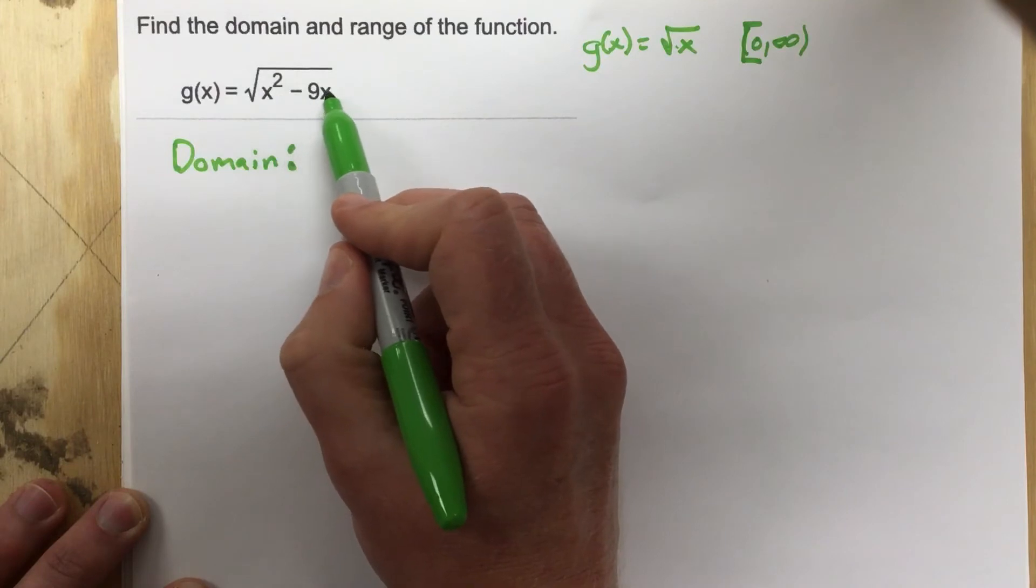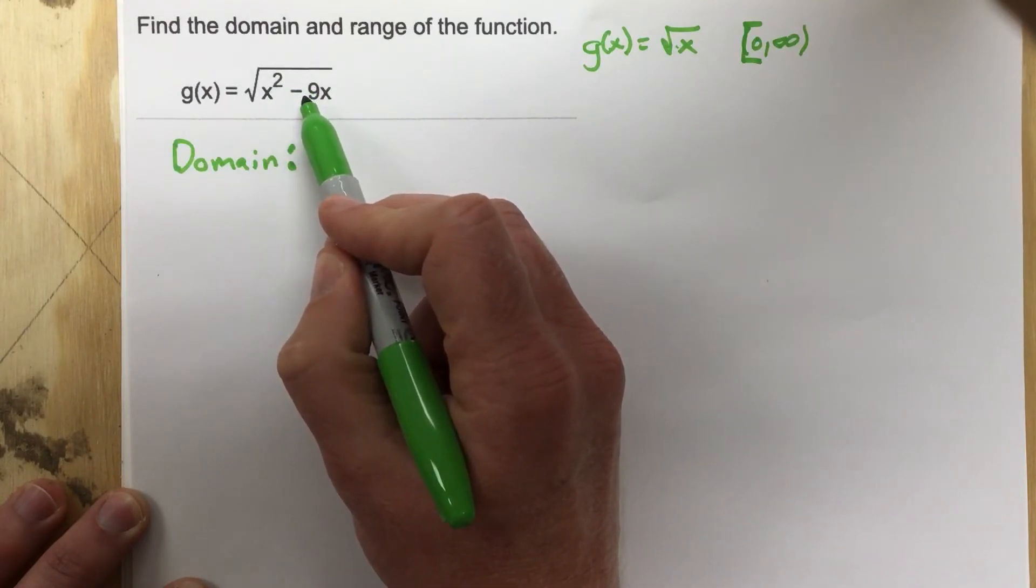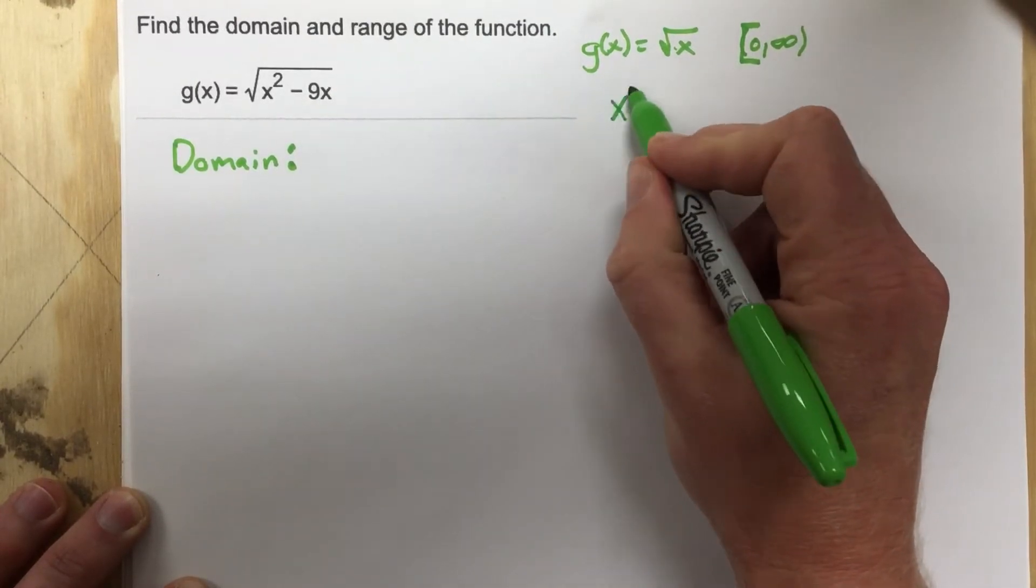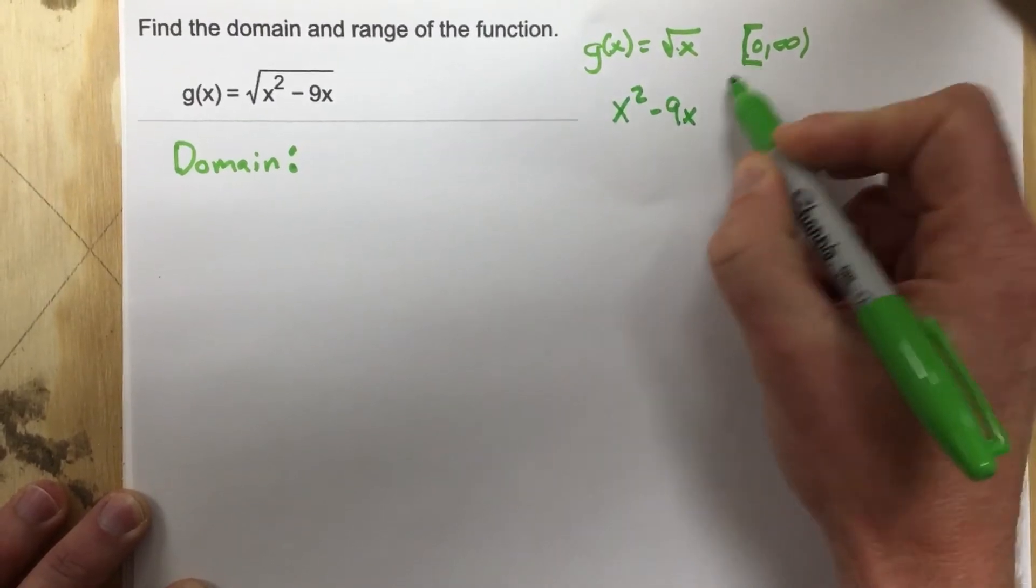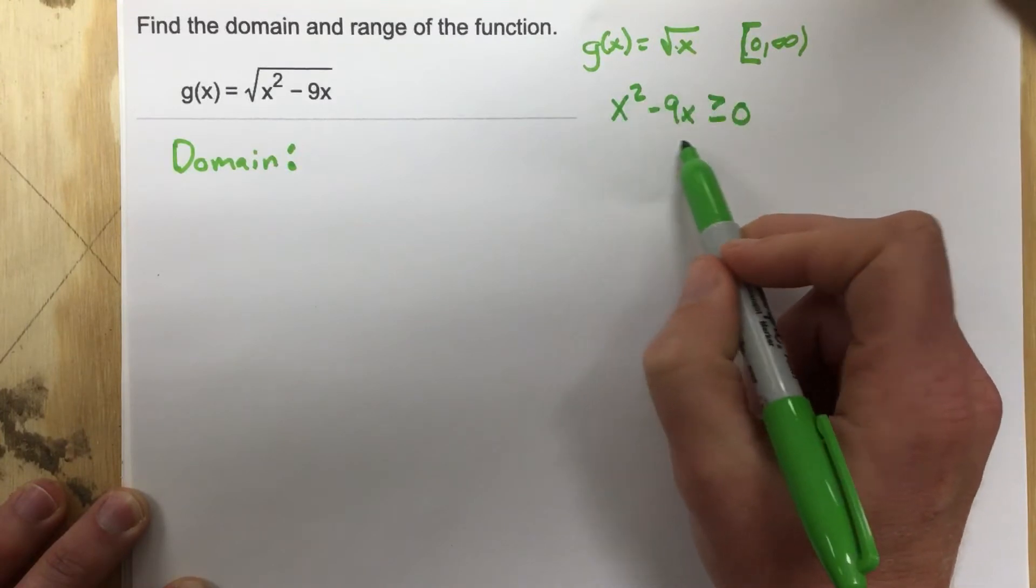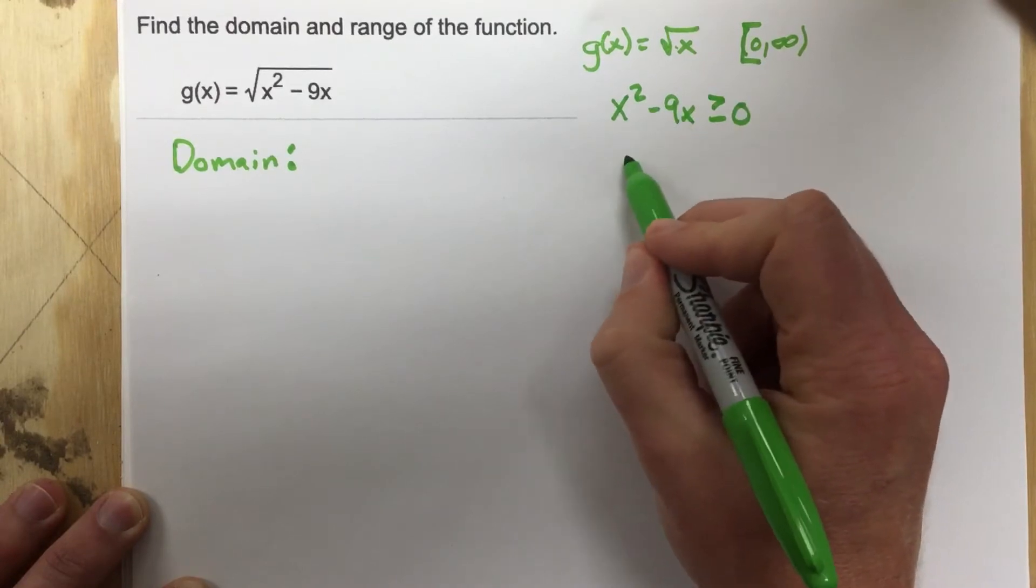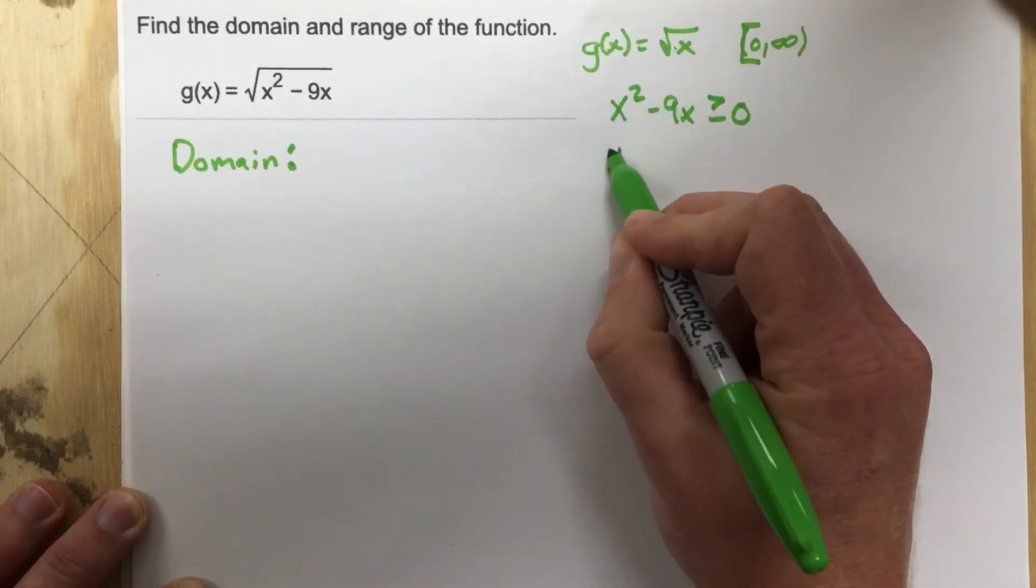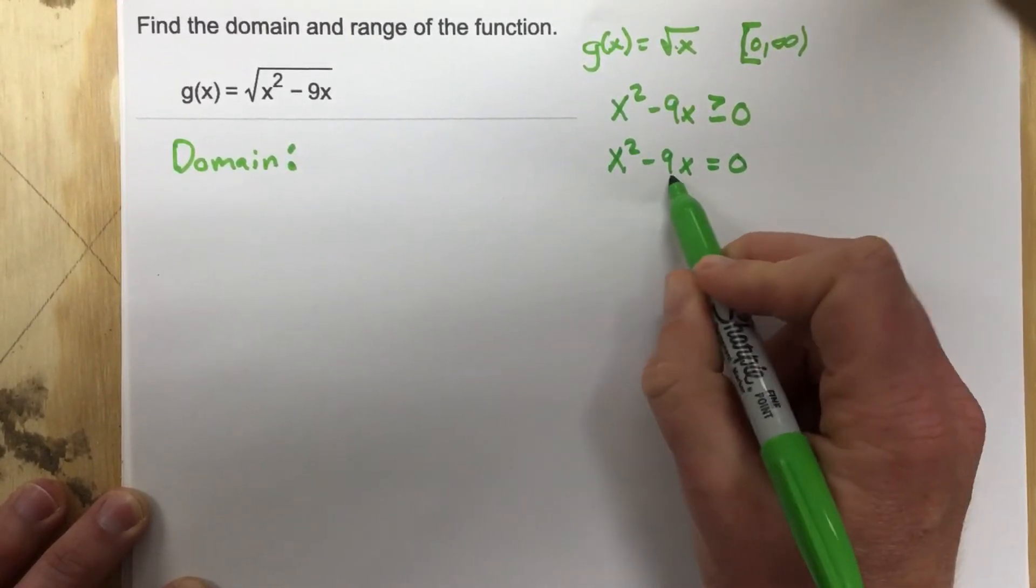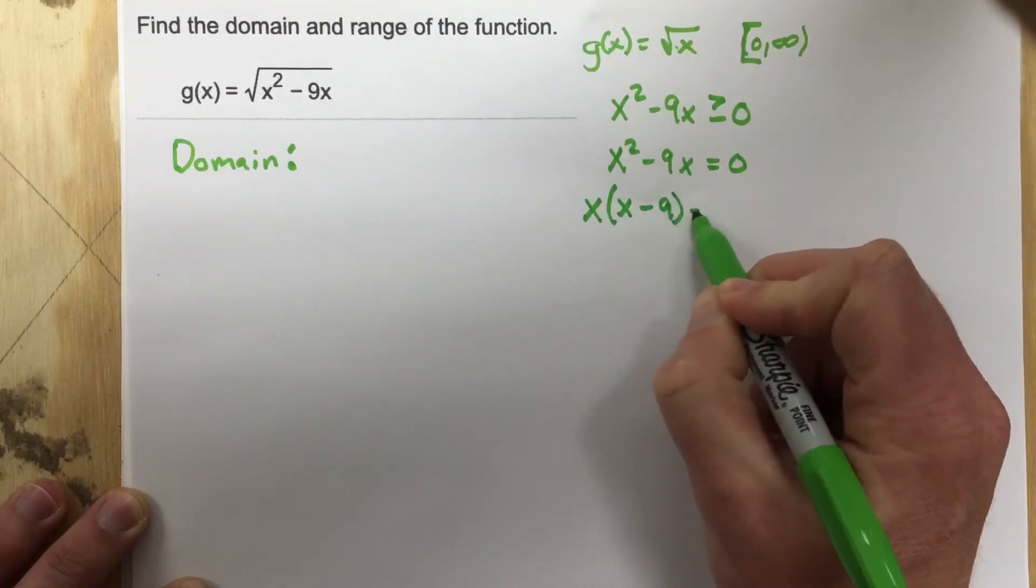That means that x squared minus 9x has to give you a number that is at least zero or greater. So the first thing I'm gonna do to find the domain is I'm gonna say that x squared minus 9x has to be greater than or equal to zero. Now you'll notice that we have a polynomial inequality. And how do we solve a polynomial inequality? We start by replacing the greater than or equal sign with an equal sign, so we'll say x squared minus 9x equals zero. And we're gonna find the roots. So we factor out x, we get x, x minus 9 equals zero.